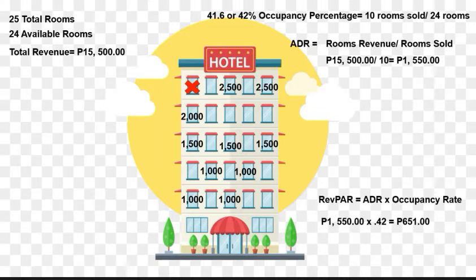This is the RevPAR formula — you just multiply occupancy rate by ADR. For this example, the RevPAR is 651.